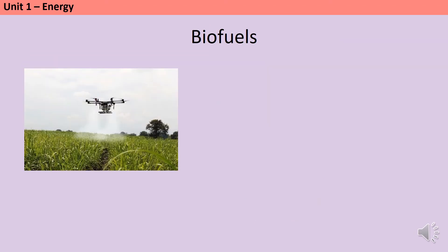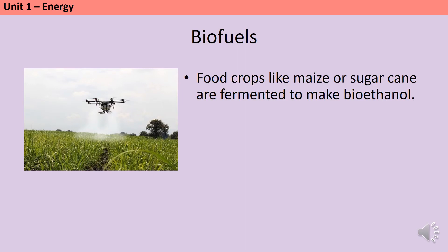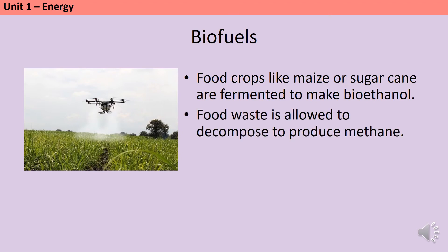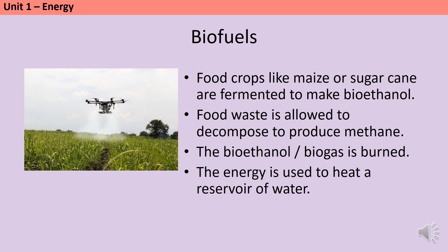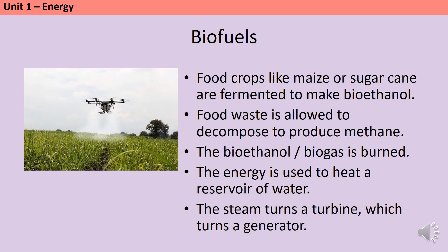Strictly speaking, a biofuel is any fuel made from a living thing, so even using wood to heat your home counts. When talking about electricity generation, we tend to use bioethanol or biogas. Food crops like maize or sugarcane are fermented to make ethanol — called bioethanol. Food waste can also decompose to produce methane, called biogas. The bioethanol or biogas is then burned just as we would burn a fossil fuel, and the energy released heats water; the steam turns a turbine and the turbine turns a generator.